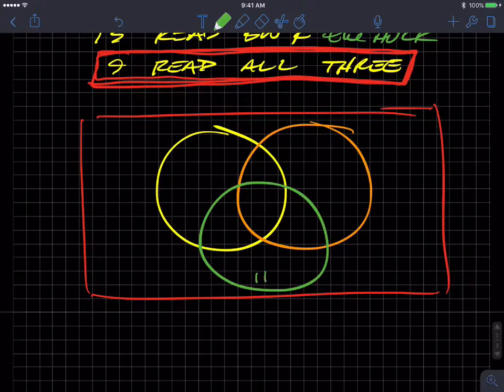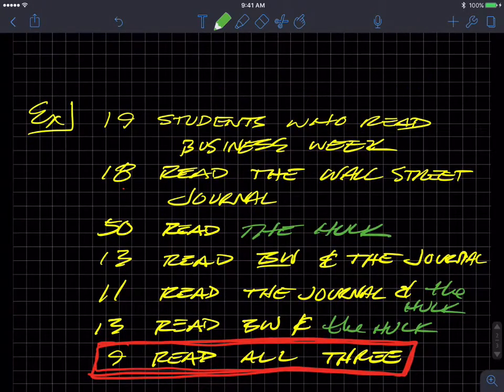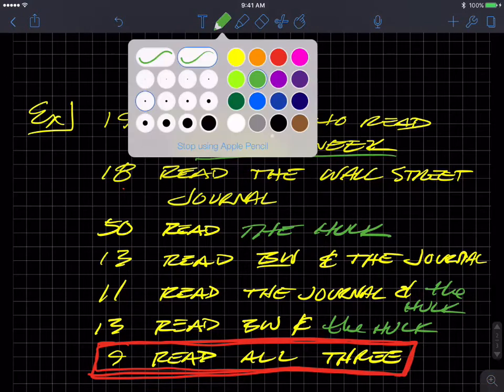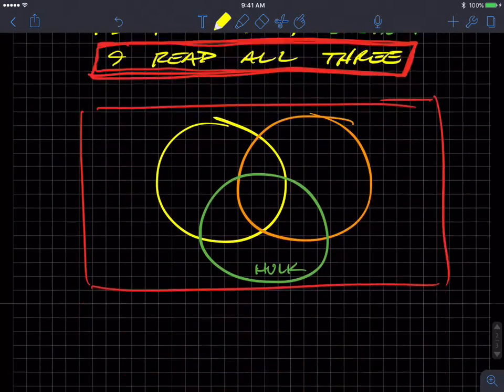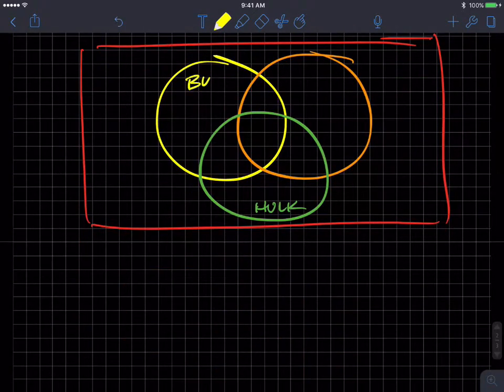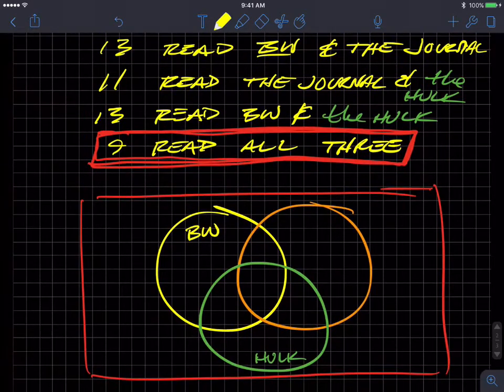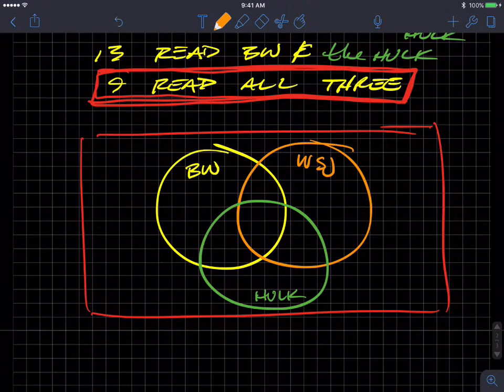Of course, the green one is going to be the Hulk. And let's choose, since it was first, let's go Business Week with yellow. Business Week. And the other one was the Wall Street Journal. So orange is Wall Street Journal. So remember, nine students read all three. So we're going to put a nine in here.